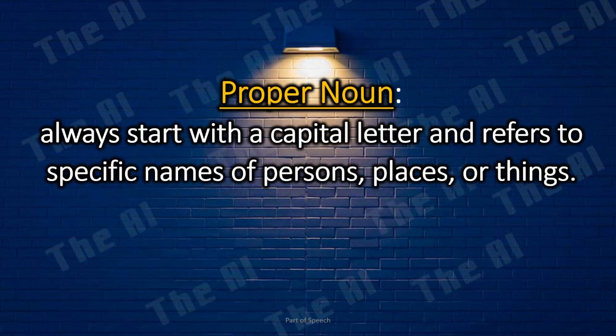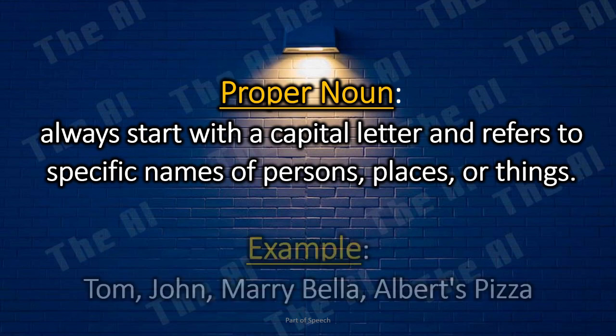Proper nouns always start with a capital letter and refer to specific names of persons, places, or things. Examples: Tom, John, Mary, Bella, Albert's Pizza.